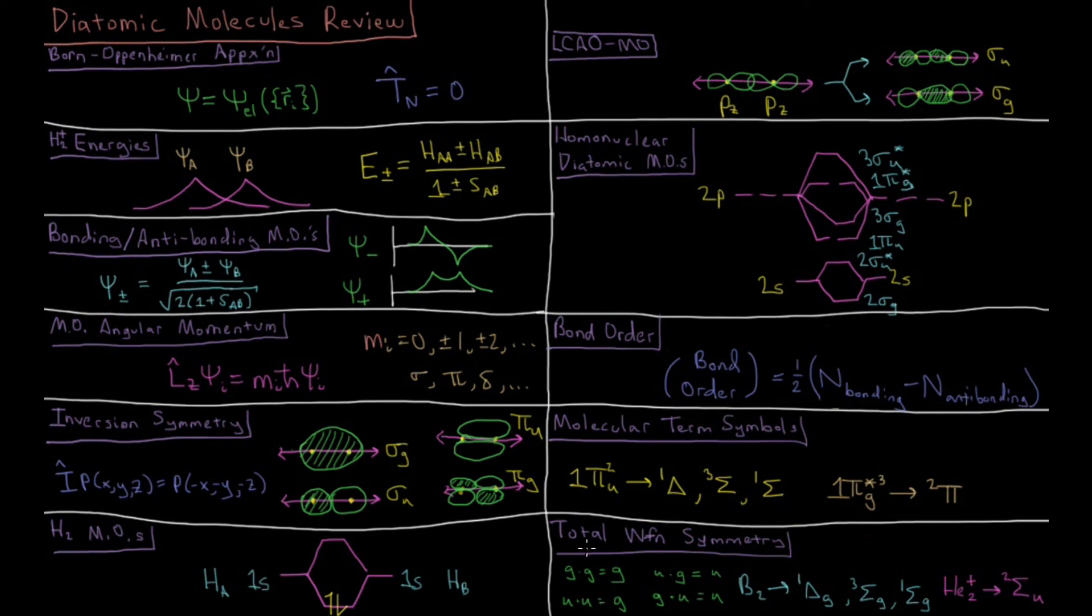And then additionally with these term symbols, we can tack on the total wave function symmetry with respect to inversion, gerade times gerade equals gerade, ungerade times ungerade equals gerade, and any kind of cross multiplication, ungerade times gerade equals ungerade.